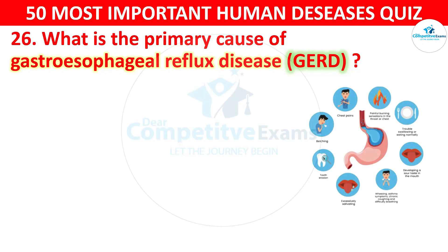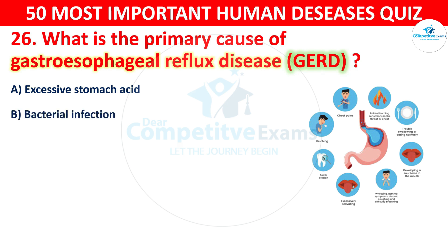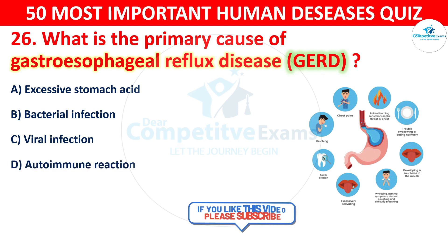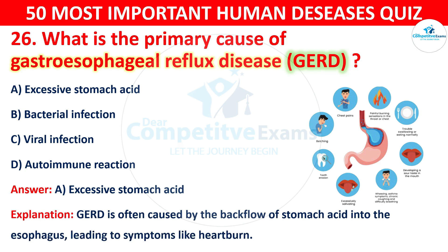Question 26: What is the primary cause of gastroesophageal reflux disease, known as GERD? Your options are: A) Excessive stomach acid, B) Bacterial infection, C) Viral infection, or D) Autoimmune reaction. The correct answer is A — excessive stomach acid. GERD, which stands for gastroesophageal reflux disease, is often caused by the backflow of stomach acid into the esophagus, leading to symptoms like heartburn.